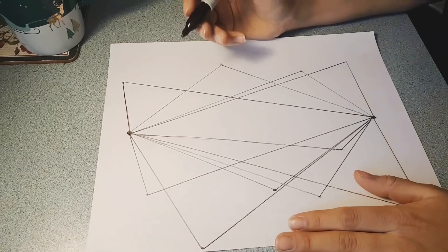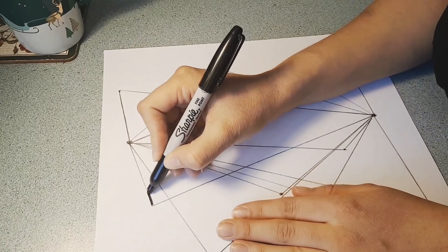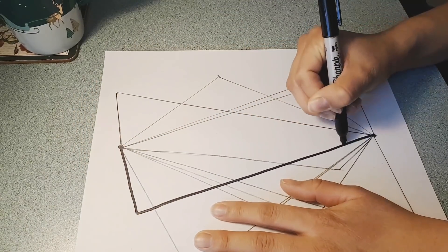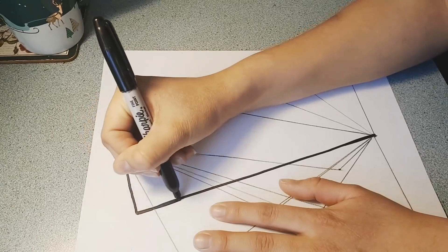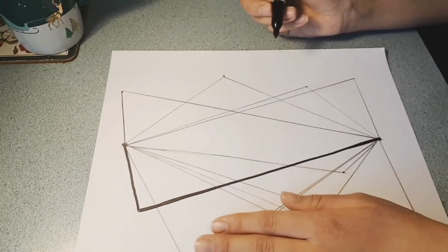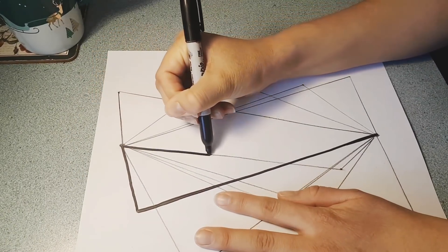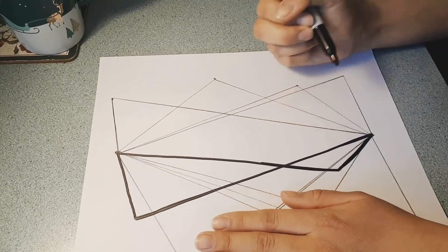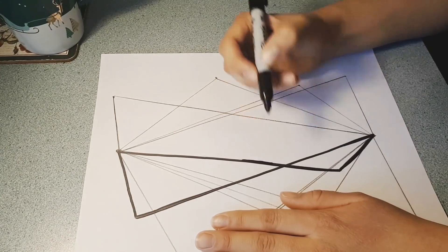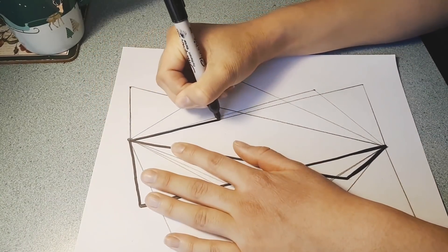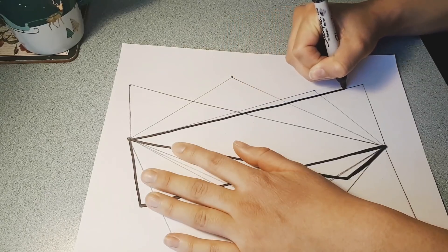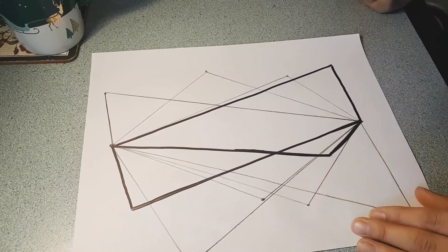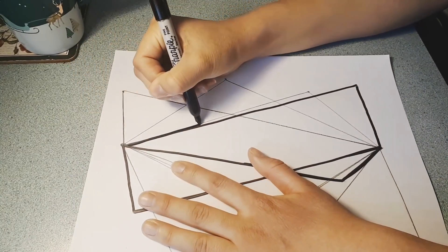Great job, we have all our lines. Now we are going to take a sharpie or a black marker and trace all of those pencil lines. Now you'll notice my lines aren't perfect, and that's okay too. It's all about doing your best job, putting in your best effort, and sometimes we don't feel a hundred percent. That's okay, just give it everything you have in that moment.